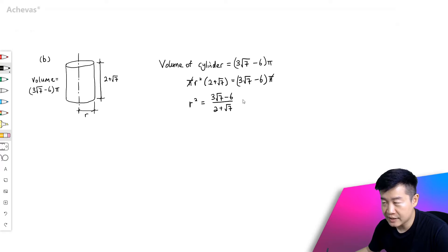Let's rationalize this. So it will be (2 - √7) divided by (2 - √7), so that we can remove the surd from the denominator.